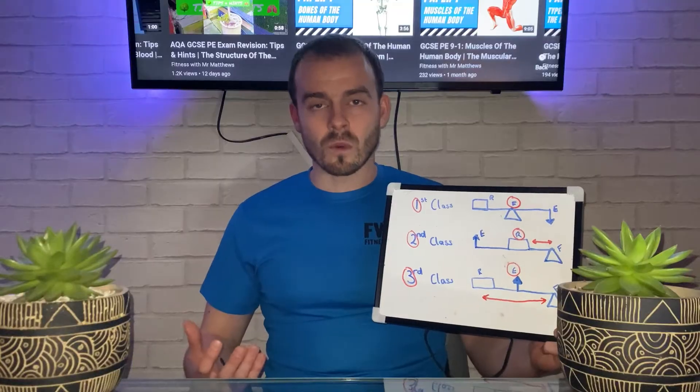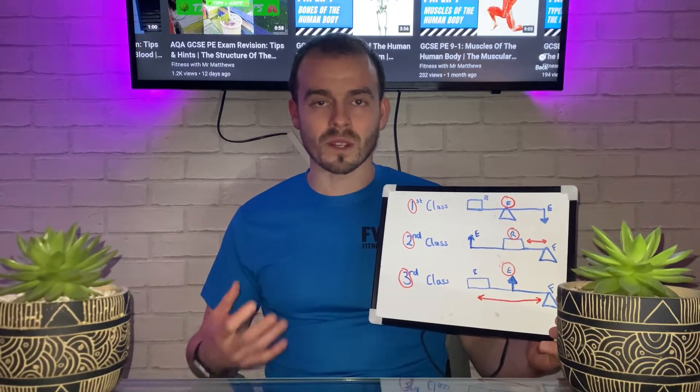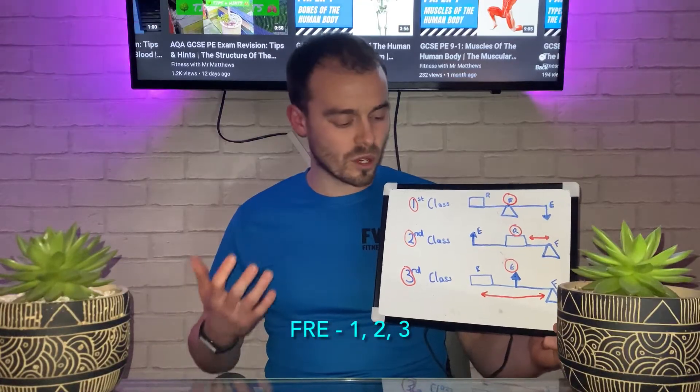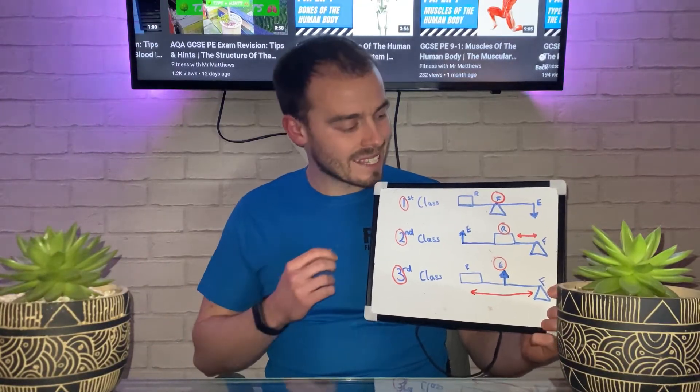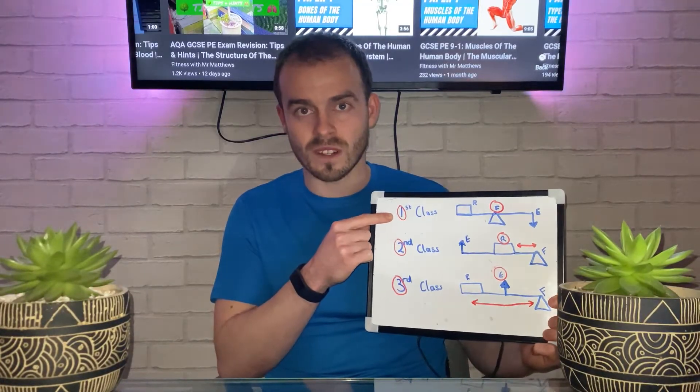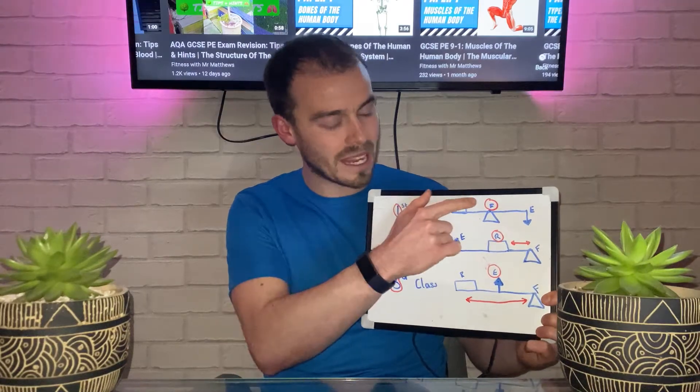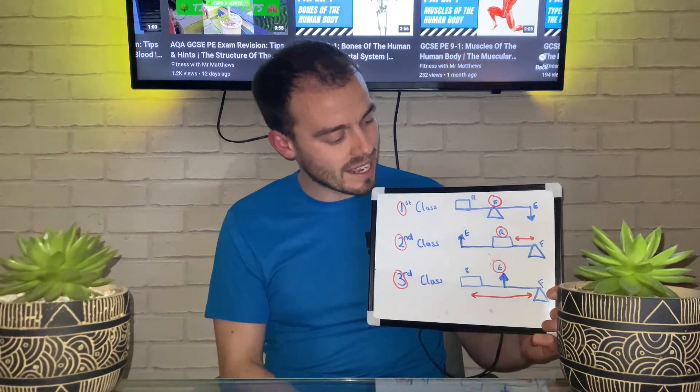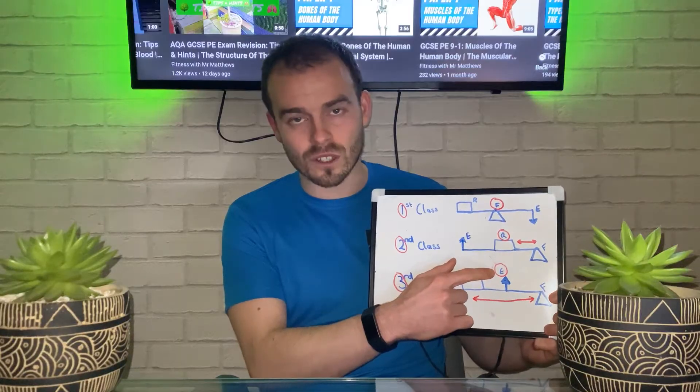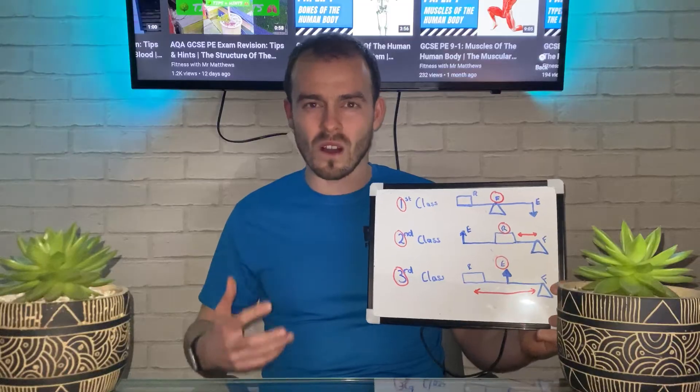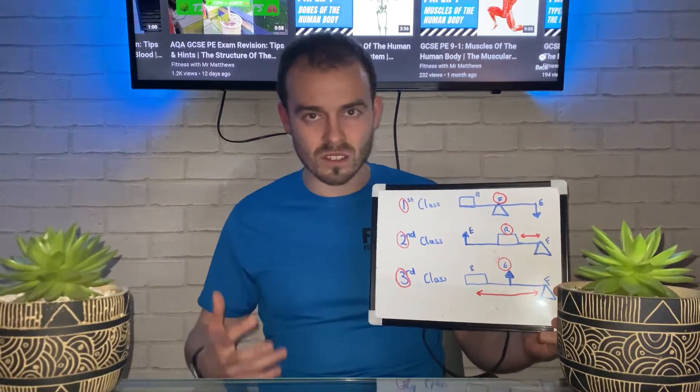I like to stick with the words fulcrum, resistance, and effort because I use something called FRE123. What that simply means is the fulcrum sits centrally in a first class lever system (F), resistance sits centrally in a second class lever system (R), and effort sits centrally in a third class lever system (E). So FRE 123.